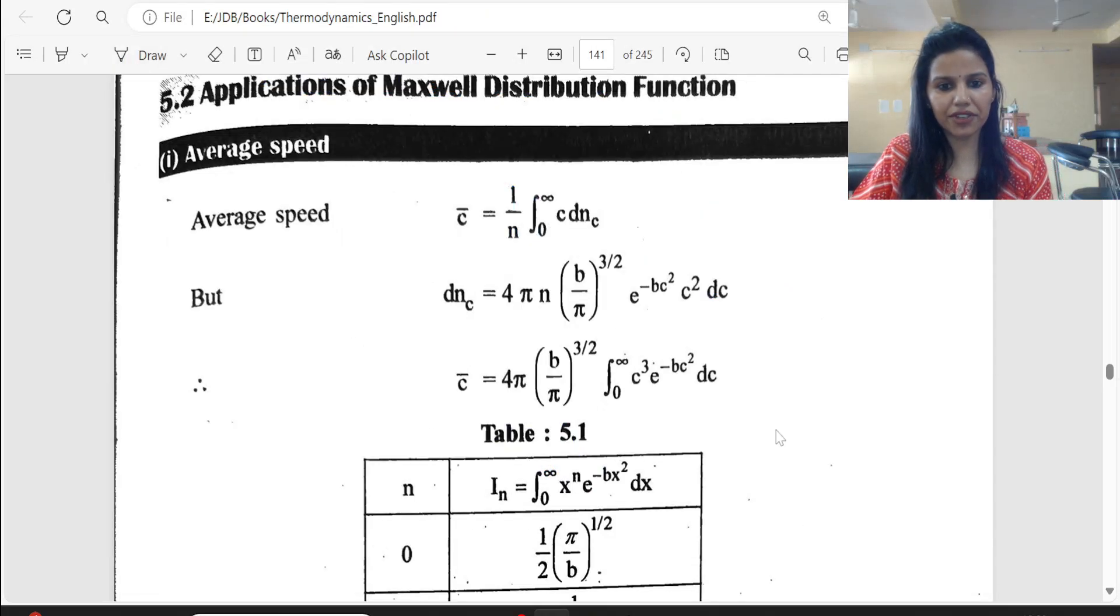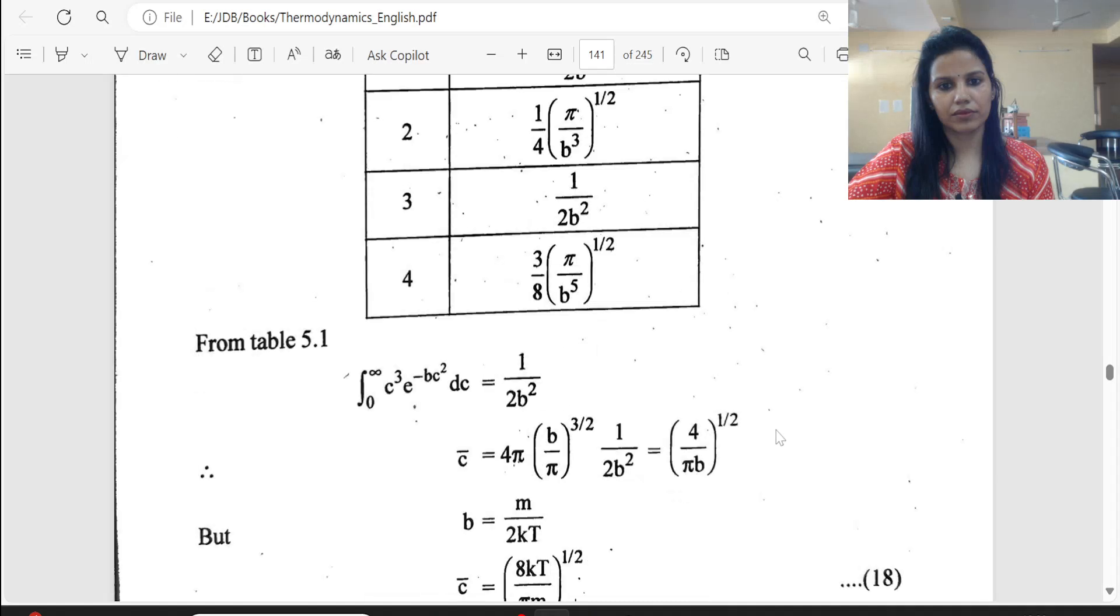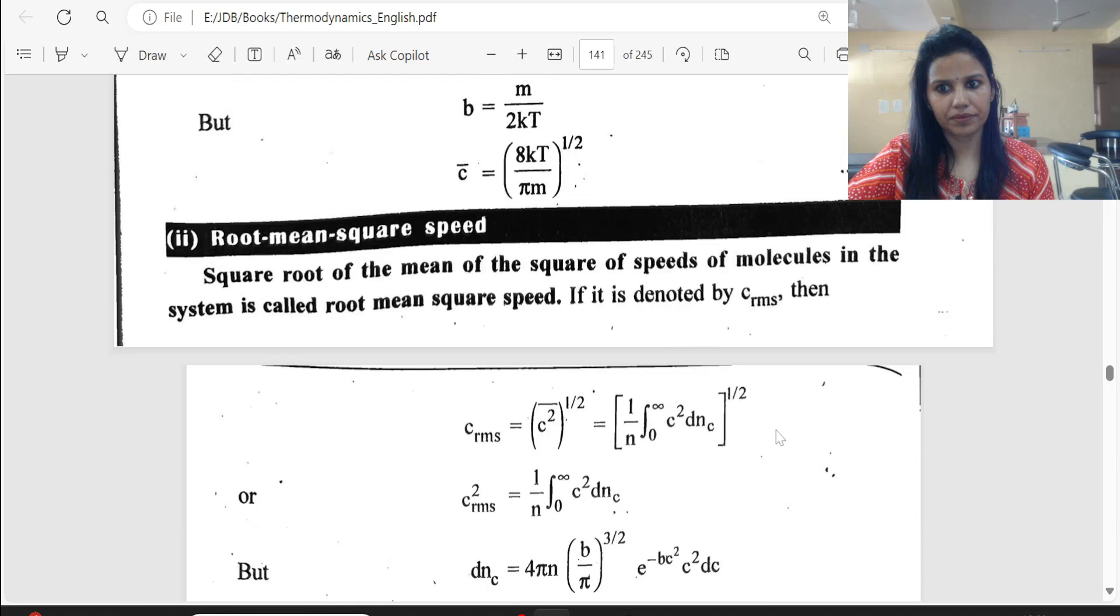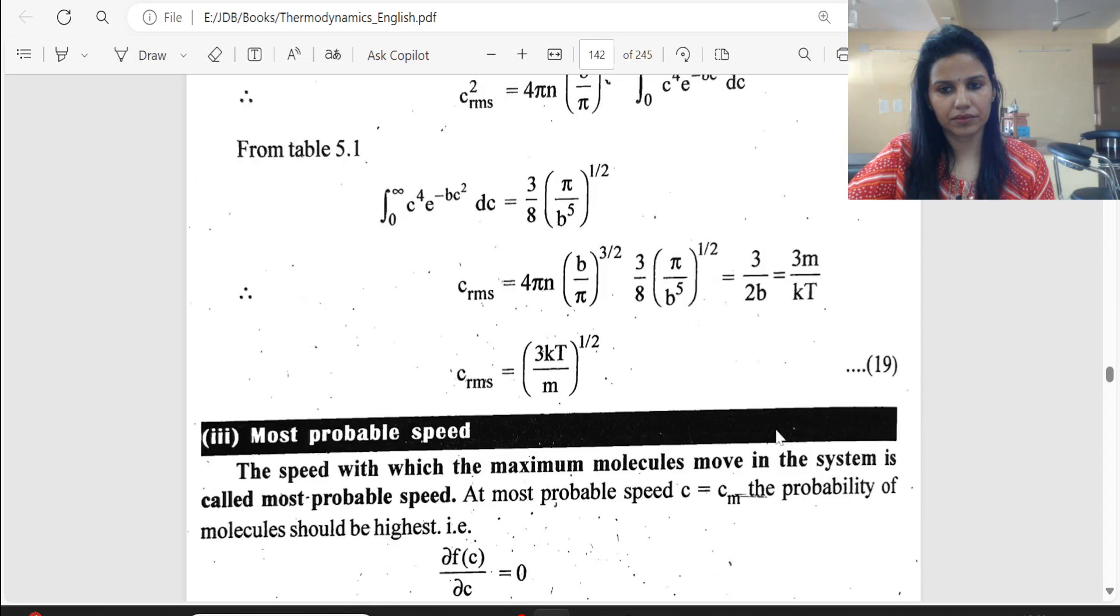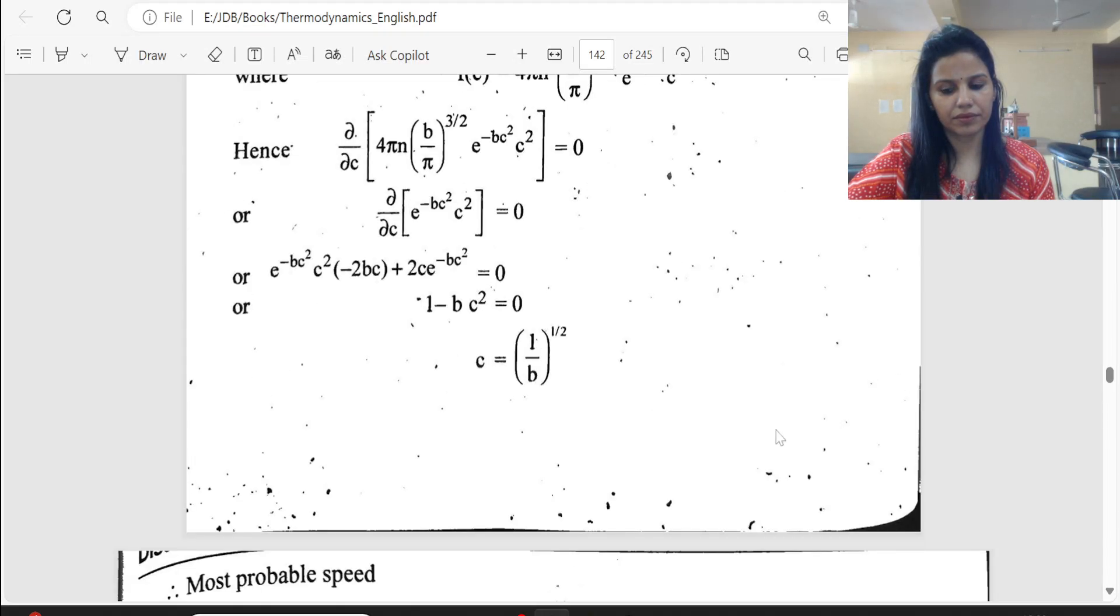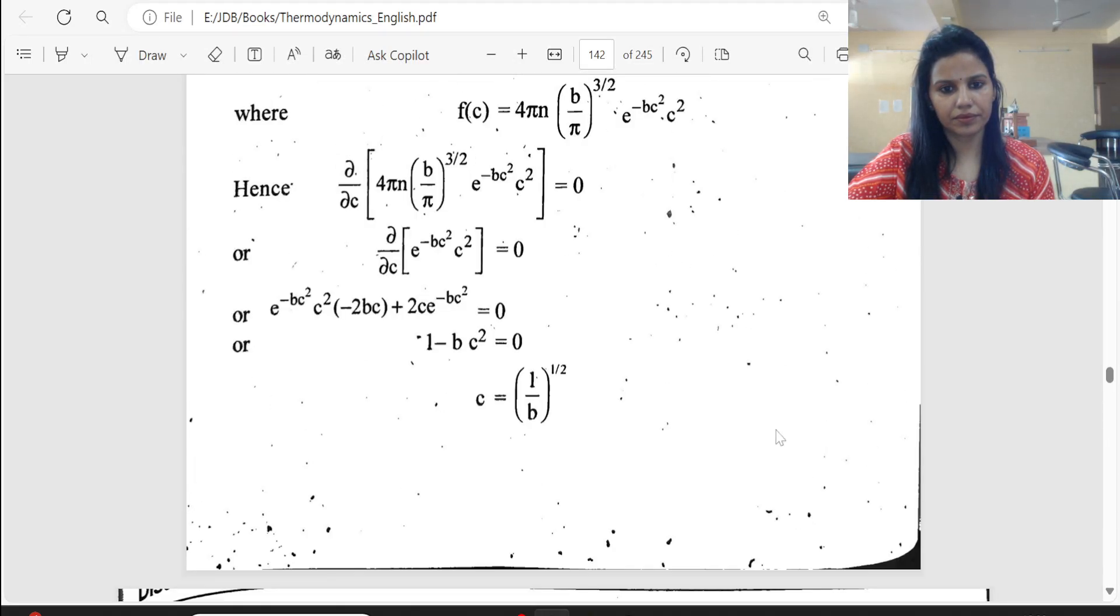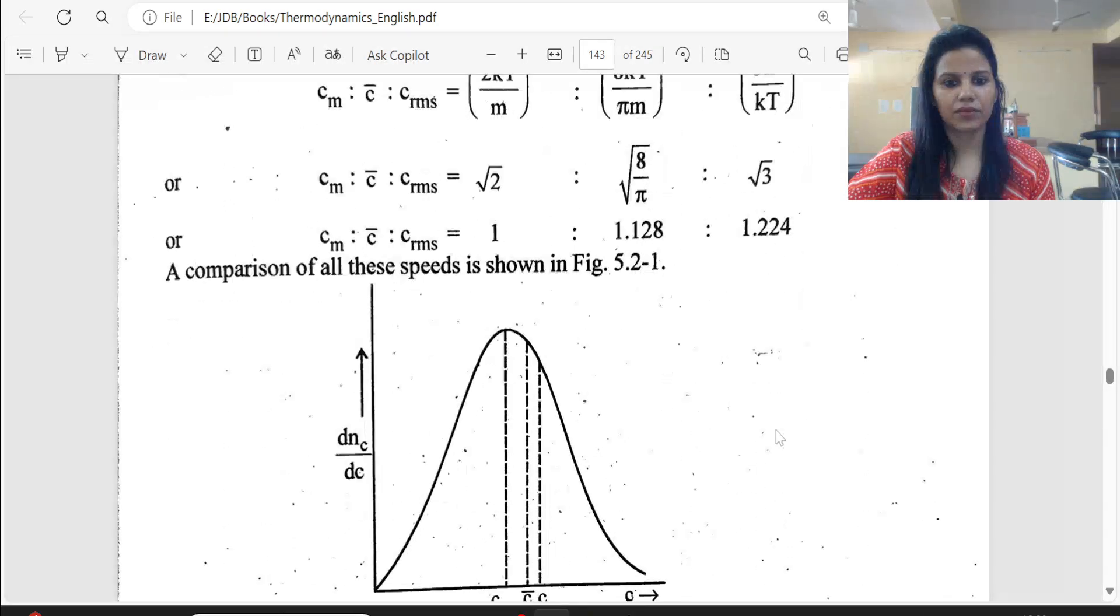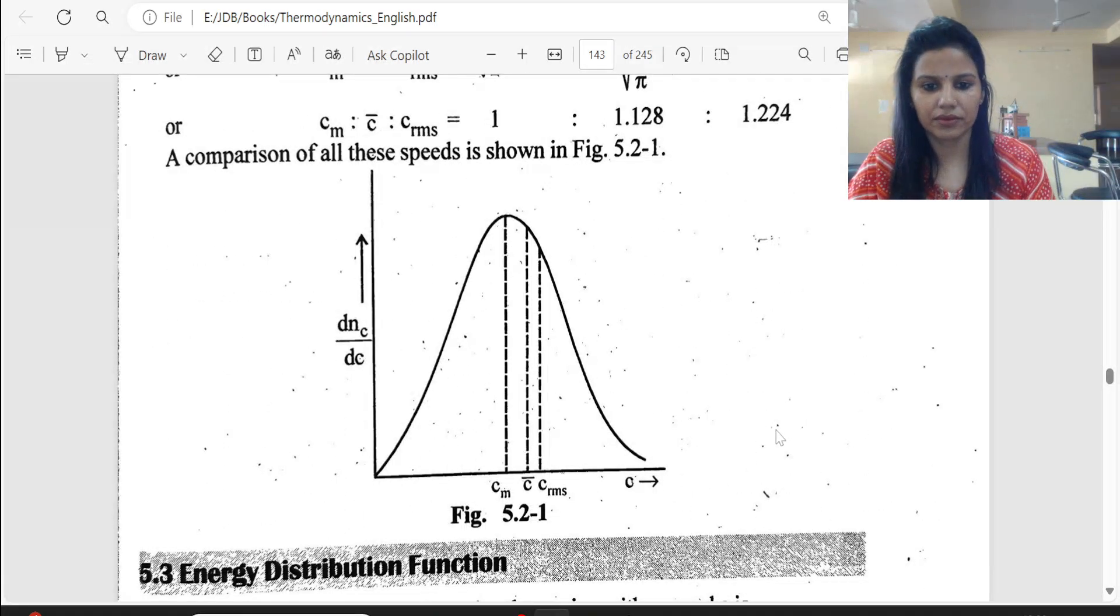In English, I'll show you - average speed first, pause and see this. Root mean square speed. Most probable speed. Their ratio. And the graph. That's it, thank you.